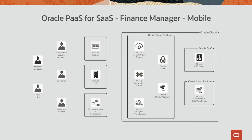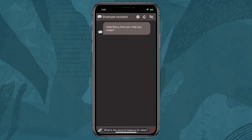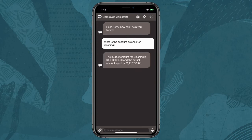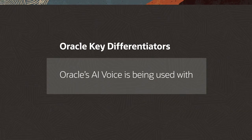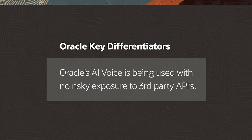The finance manager realizes that he has to leave his office and walk across campus to his next meeting, but still wants updates on his accounts. Oracle's digital assistant provides broad channel support like Slack, Teams, SMS, mobile apps, text-to-speech, and speech-to-text capabilities. He pulls out his phone and opens his company's mobile application where the digital assistant has been embedded, presses the microphone button, and says, "What is the account balance for cleaning?" The digital assistant responds with the answer, and in the background, Oracle's AI voice is being used with no risky exposure to third-party APIs.